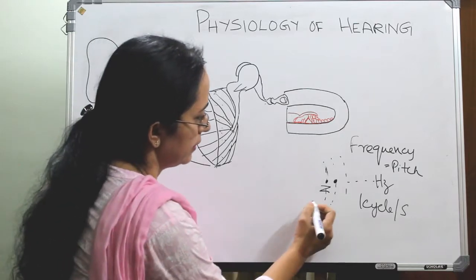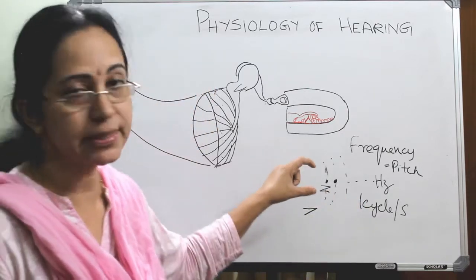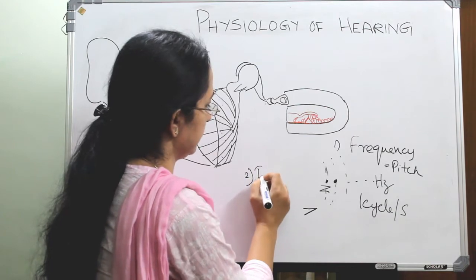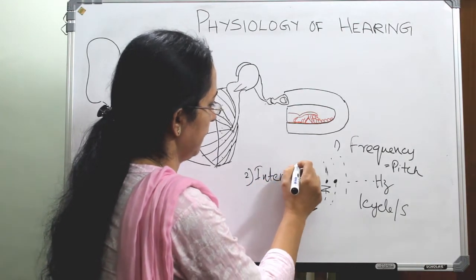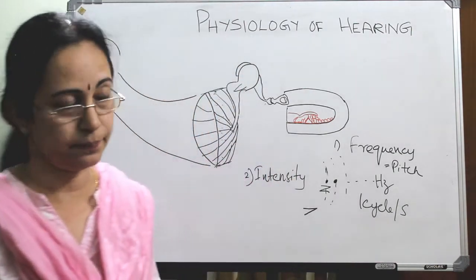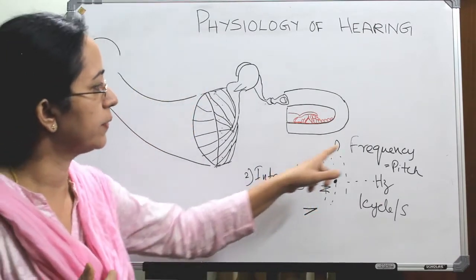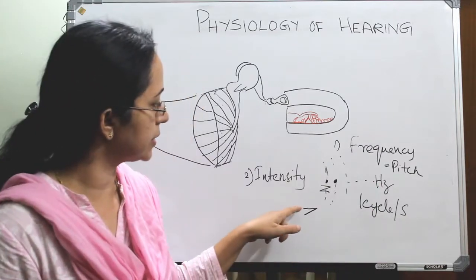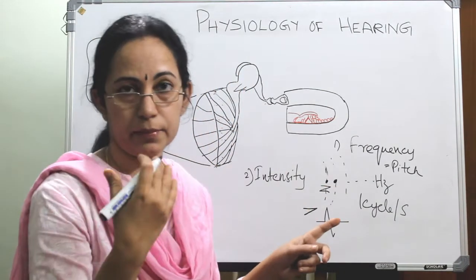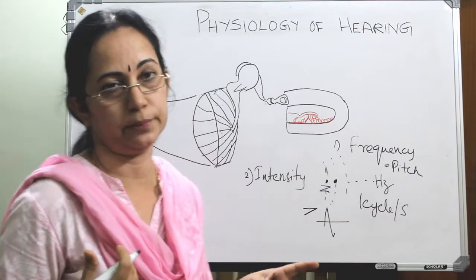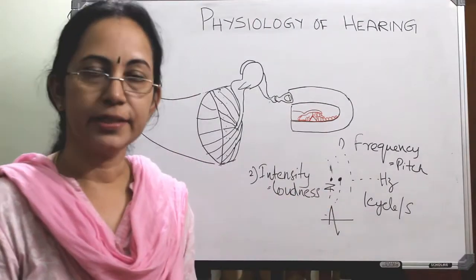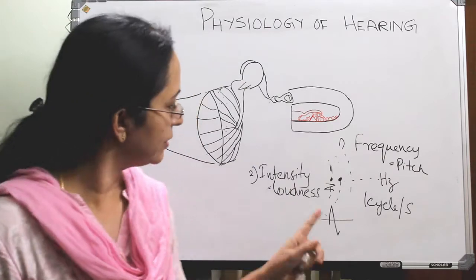The intensity of the motion can also be measured. So one property is frequency and the second is intensity. Intensity is measured by two methods. Intensity is otherwise called loudness. Frequency is pitch and intensity is loudness — that is how much the wave moves from the baseline. The strength of the back and forth motion is the intensity or loudness.